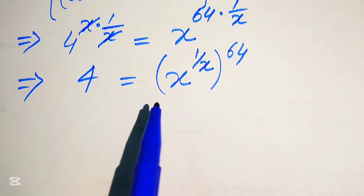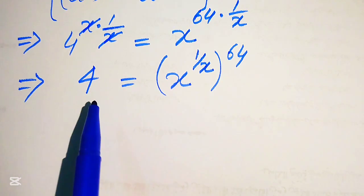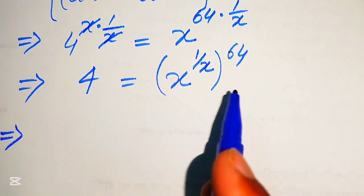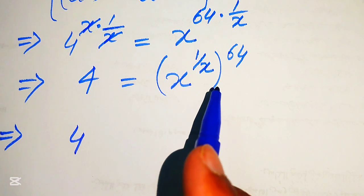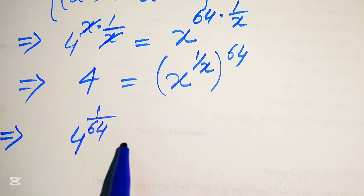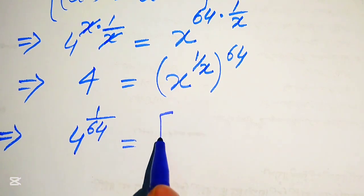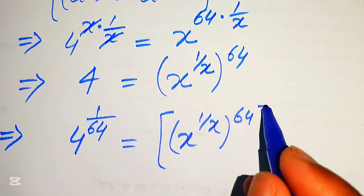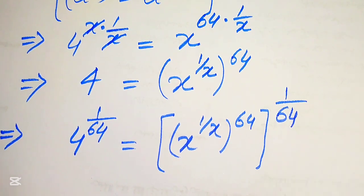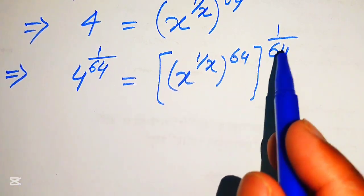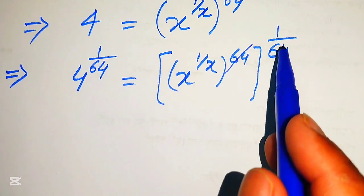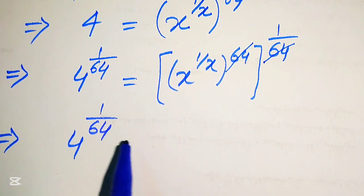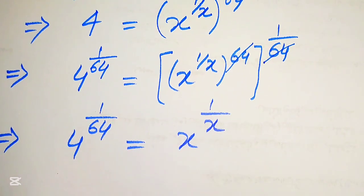Now we move the variable term to the right hand side and the constant term to the left hand side to eliminate the 64 from the right hand side. To eliminate 64, we take the 64th root on both sides — that is, we raise both sides to the power of 1 over 64. The two exponents multiply, the 64 cancels, and we obtain 4 to the power of 1 over 64 equals to x to the power of 1 over x.